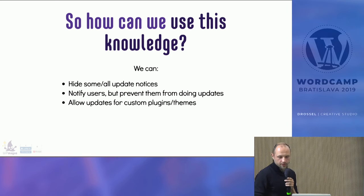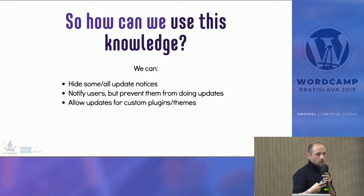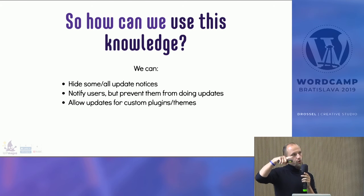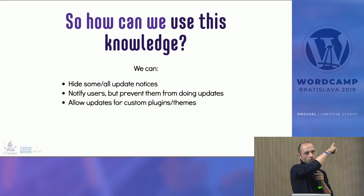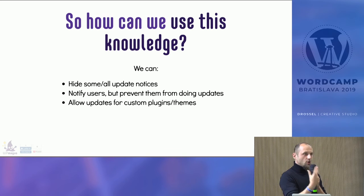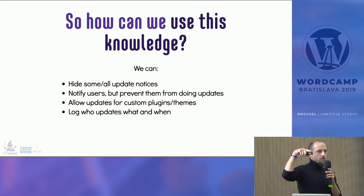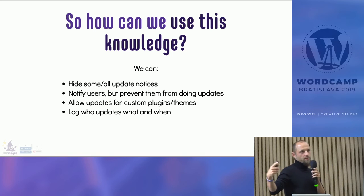Another usage: allow updates for custom plugins and themes. You can hook into the pre_set_site_transient filter, send a request to your own server, get the same response format that the WordPress plugin repository sends, and show that there's a new version of your custom plugin that is not in the WordPress repository. Another usage: log who updates what and when — so if Peter clicks update, we know who to blame if the site breaks.